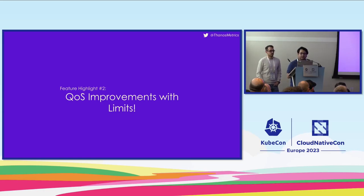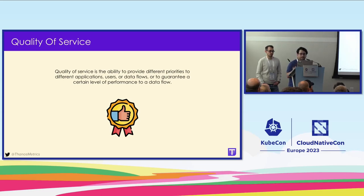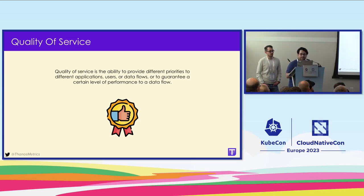The next improvement is quality of service improvements for Thanos, especially for monitoring-as-a-service use cases where you serve multiple different tenants. The meaning of quality of service in SaaS terms is the ability to provide different priorities to different users or data flows and guarantee a certain level of performance. We want to make sure a single tenant or user does not ruin service for other tenants. In the context of Thanos, there are two data flows we want to protect: the read and write paths.